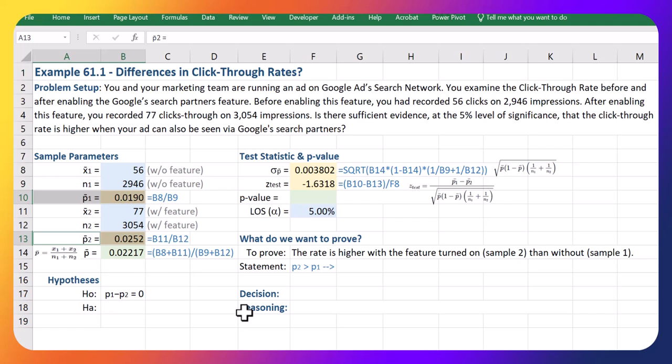If you notice, I just changed this to a p and a p—that means true proportion. These are my sample results; I don't need to prove anything with those. I have those results; those are true. Those are the two samples I collected. What I'm hoping to do is use them to infer something about the true proportions for each of these populations. I think that they're different—I think that turning on this feature is going to increase the click-through rate, but I'm not sure yet. So I am hoping to prove that after, the rate is higher than before turning on that feature.